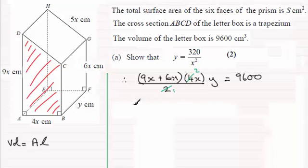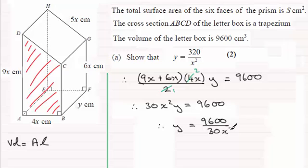Now is 30x squared y, so 30x squared y equals 9600. And then clearly if I make y the subject by dividing both sides by 30x squared...